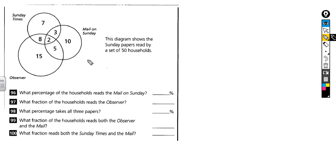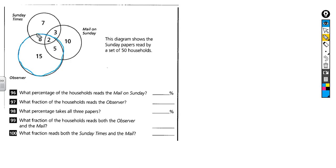It might be easier if we can imagine a situation that makes a little bit more sense. A lot of children find it easier to imagine a school playground, and that somehow you have got a really good bird's eye view of the school playground. The teacher has got some nice bright colored ribbon and has used that to make some circles.